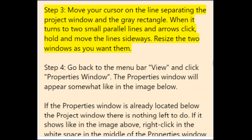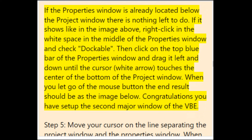Step 3: move your cursor on the line separating the Project window and the gray rectangle — when it turns to two small parallel lines with arrows, click, hold, and move sideways to resize the windows. Step 4: go back to View and click Properties Window. If the Properties window appears floating, right-click in its white space and check Dockable, then drag it left and down until the cursor touches the center of the bottom of the Project window. Congratulations — you have set up the second major window of the VBE.